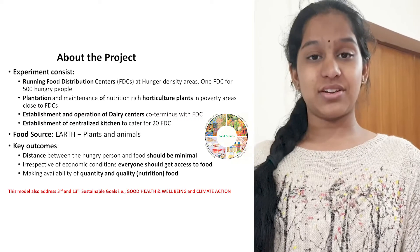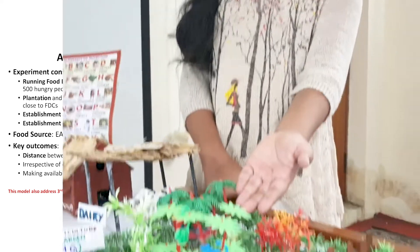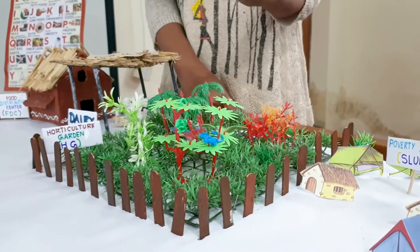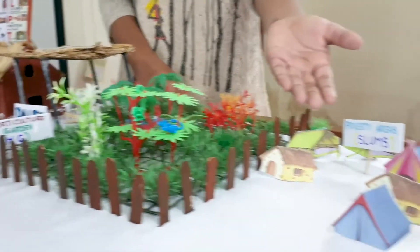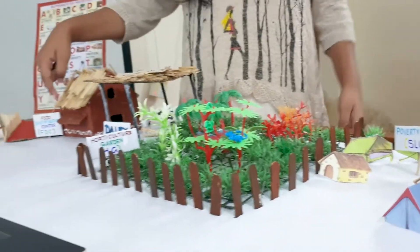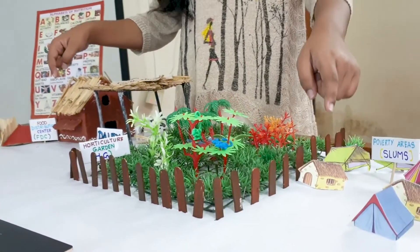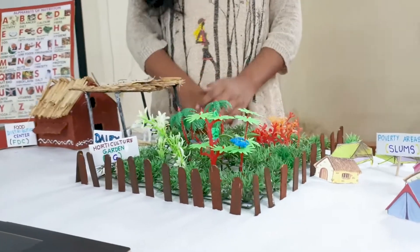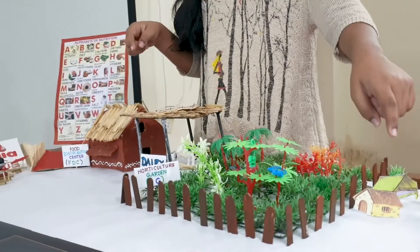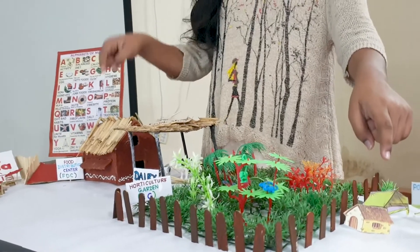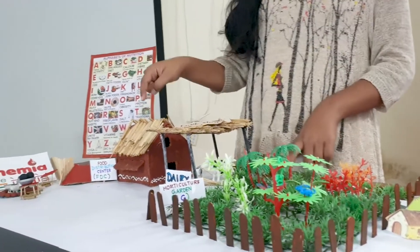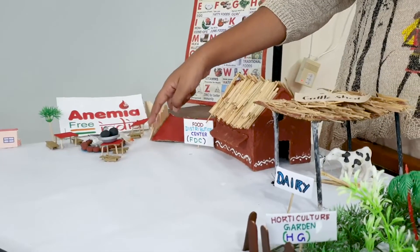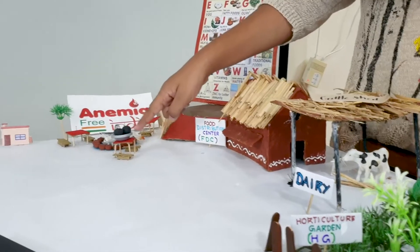In this AI for Zero Hunger, the experiment involves plantation and maintenance of nutritious-rich horticulture plants in poverty areas, and running food distribution centers at high-density areas. The source of food is plants and animals. Key achievements of this project: the distance between the person and the food should be minimal; irrespective of economic condition, everyone should get access to food; and making availability of quality and quantity food.